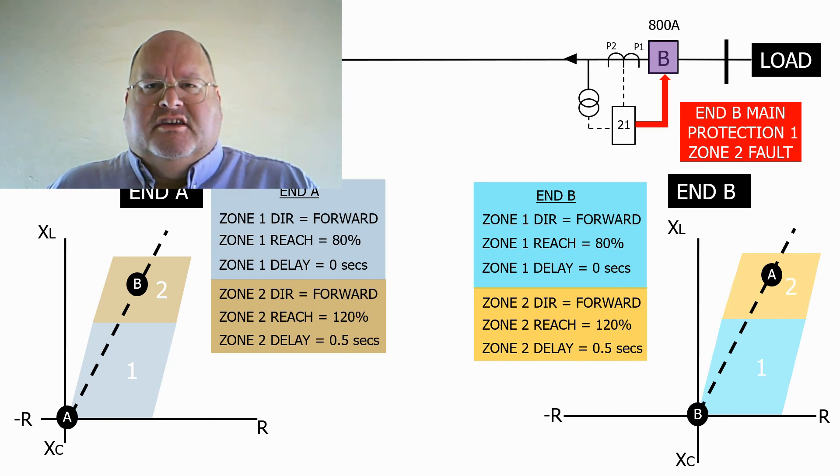To end, the impedance protection schemes are used widely on distribution electrical systems and transmission feeders, where we don't have any communication facilities. They provide coverage for 100% of the feeder length.